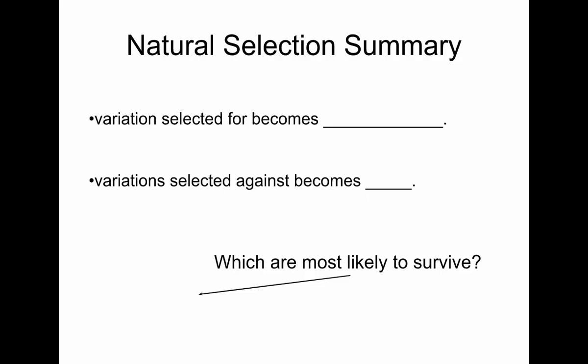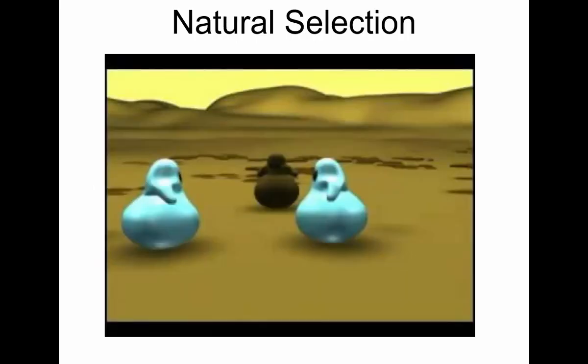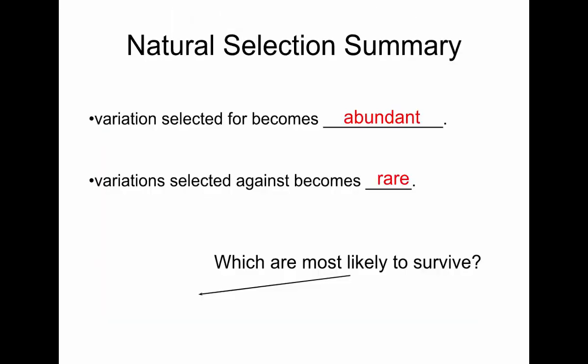Any variation that is selected for will become abundant in the population, and any variation selected against will become rare. The individuals most likely to survive are those with the best characteristics, and it varies from environment to environment.